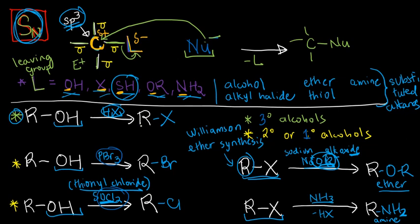And just as a review, let's look at the details. First, when we're dealing with SN reactions, we're primarily dealing with substituted alkanes, which involve classes like alcohols, alkyl halides, ethers, thiols, and amines.